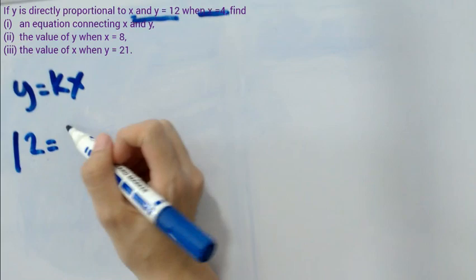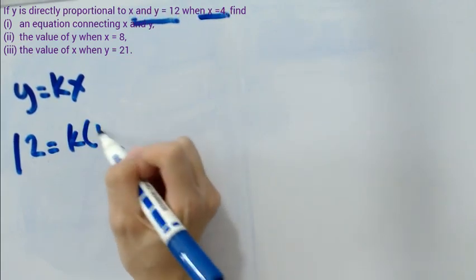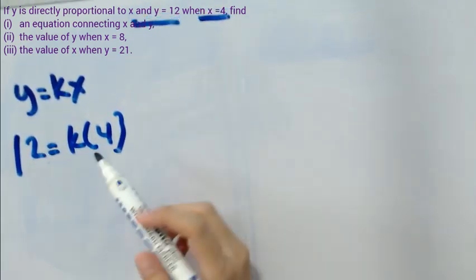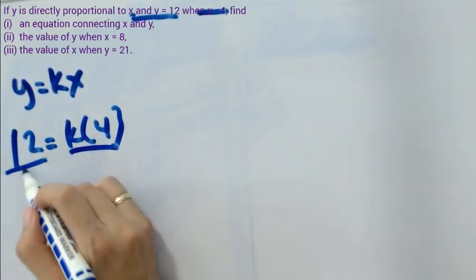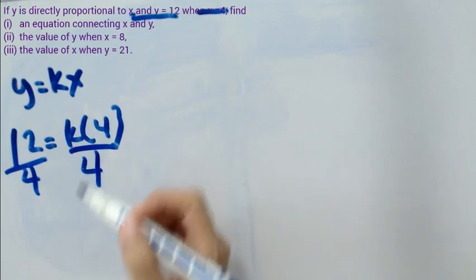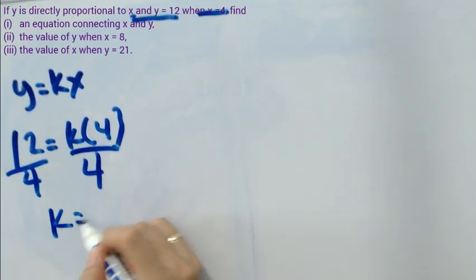We have 12 equals k multiplied by 4. To find the value of k, we divide both sides by 4. So k equals 3.